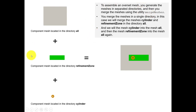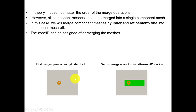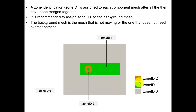You create your component meshes and start doing the merging. In this case we're going to proceed by doing a first merge of cylinder into 'all', and then a second merge of 'refinement zone' into 'all'. The mesh we're calling 'all' - the background mesh - is the one taking all the other meshes. In this case it is the background mesh, the one that does not have an overset patch, but the order can be anything.